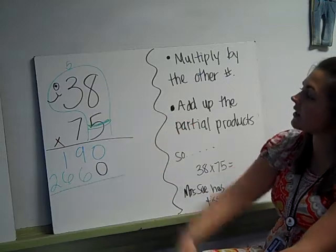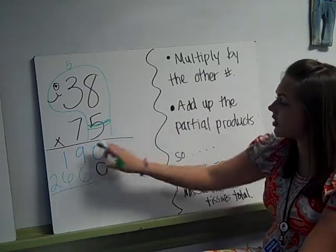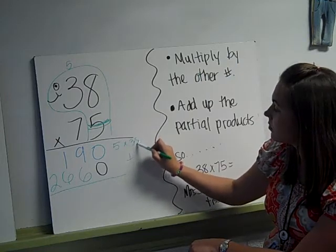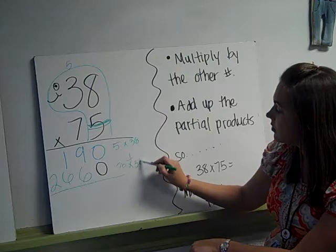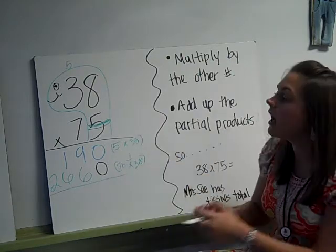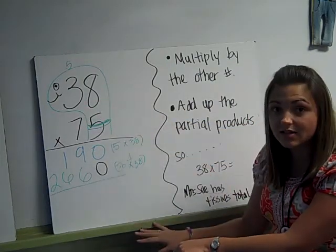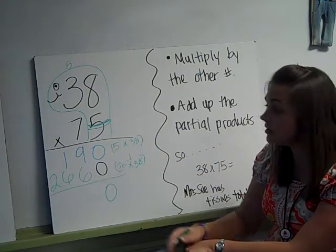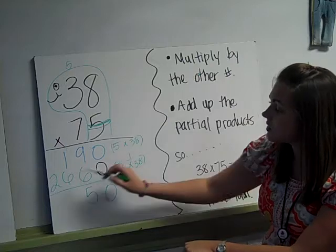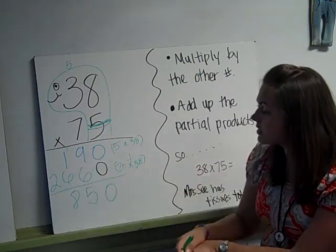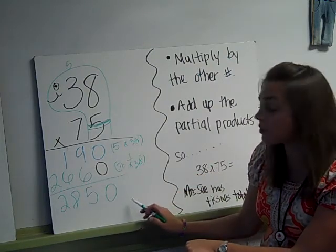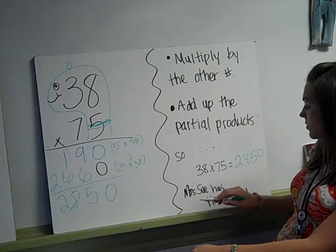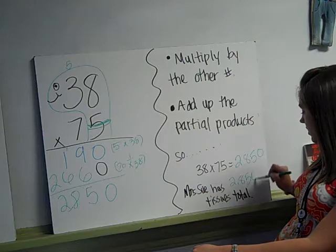Now, my last couple steps, after I multiply by that seven, now I need to add up the two partial products. These two numbers are going to get added together. Part of the product, part of the product. Essentially, I multiplied five times thirty-eight, and then seventy times thirty-eight in this whole process. Now I'm going to add them up. Zero plus zero is zero. Six plus nine is fifteen, so I have to carry a one. Bring down my five. Six plus one is seven, plus one is eight. And then my two comes down. I put my comma three from the right-hand side. One, two, three. So my product is two thousand eight hundred fifty. So Miss Sue has two thousand eight hundred fifty tissues in all.